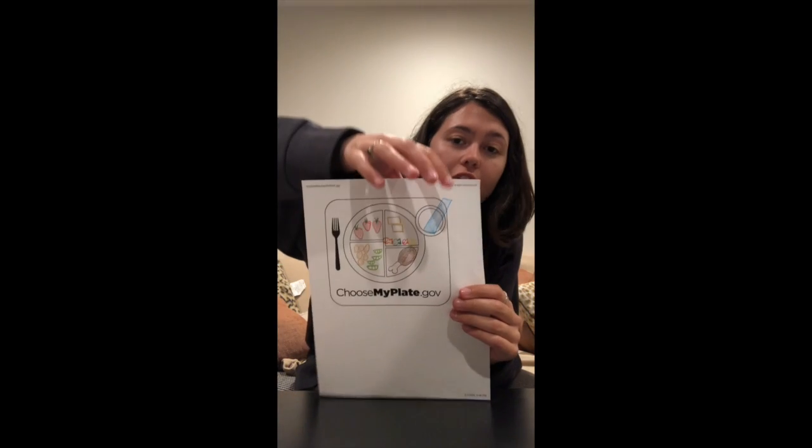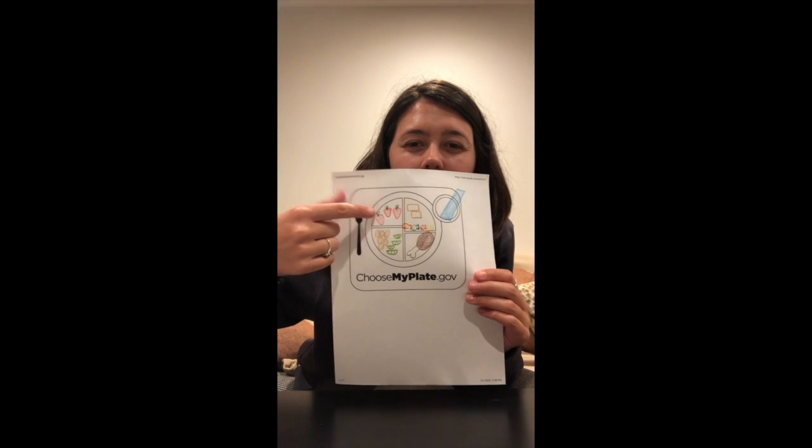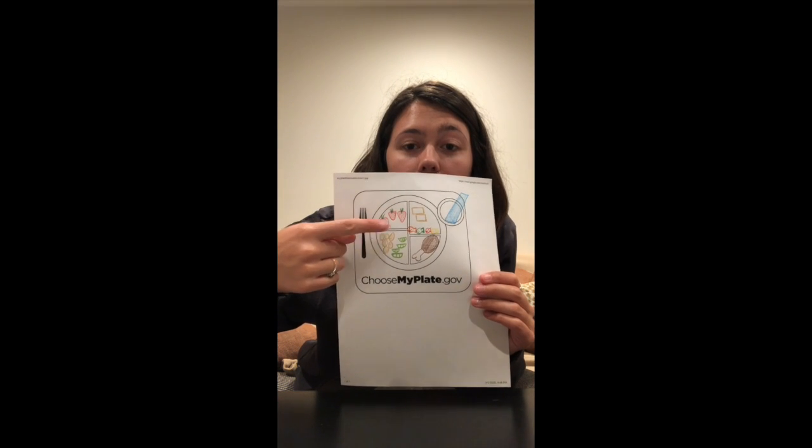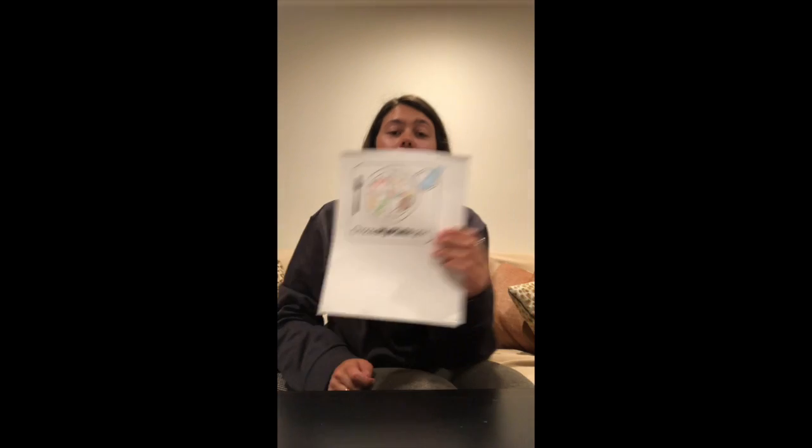Now that we have our plates all built, this looks very yummy. We have our yogurt. We have our bread, our fishy crackers, our strawberries, our potatoes, our snap peas, and our chicken. So we've filled up everything that we need to have a super nutritious meal.